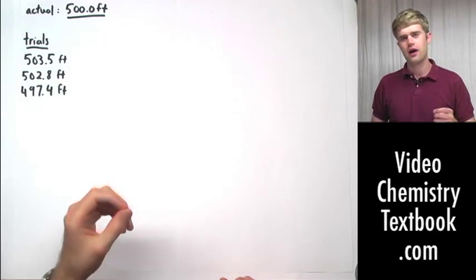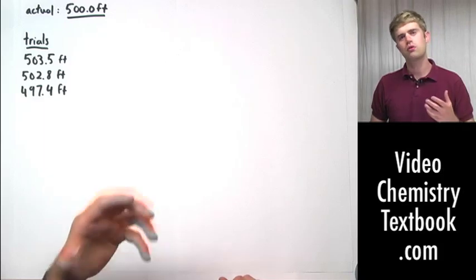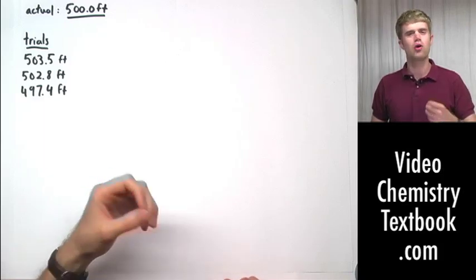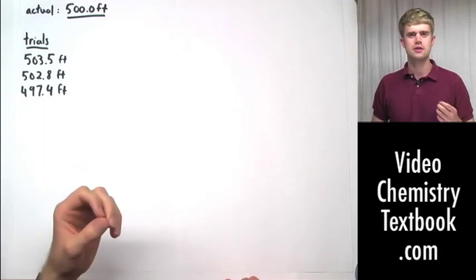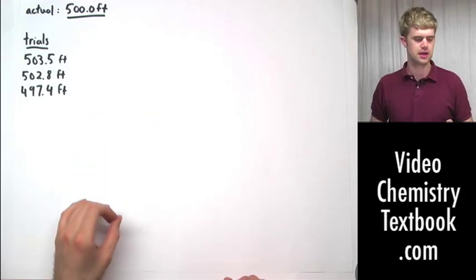When we measure things, our values aren't always exactly accurate. And so it can be important for us to tell how far off we were. This is a value called error, and we'll talk about how to calculate this in this lesson.